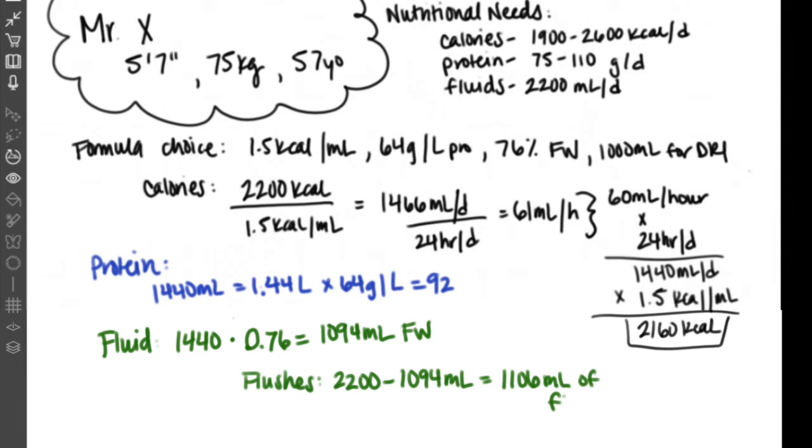Typically with water flushes that we use with patients on continuous feedings, we want to give them the flush every four to six hours. We're going to pick a range of giving him a flush every four hours. We'll take this 1,106 milliliters and divide that by six because we'll be giving him flushes six times a day. That gives us a flush volume of 190 milliliters.